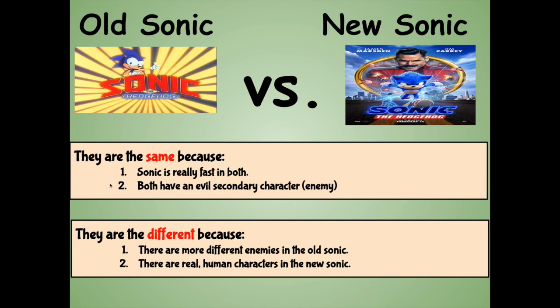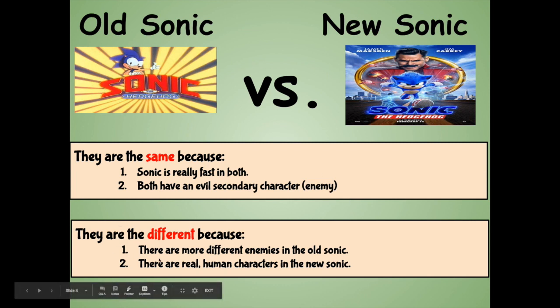Here's a few ideas. One, they're the same because Sonic is really fast in both. Two, both have an evil secondary character — an enemy. In both cases, Dr. Robotnik is in there. They're different because there are more different enemies in the old Sonic, and in the new Sonic there are real human characters. So we know we can compare movies, cartoons, and video games. But great readers also use this skill of comparing and contrasting when they're reading books. Let's take a look at today's lesson on how we can do that as readers.